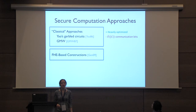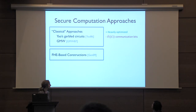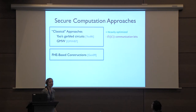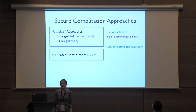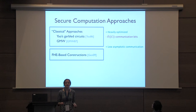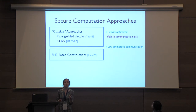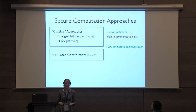In comparison, starting in 2009, breakthrough works in fully homomorphic encryption gave us the first ways of getting secure computation where communication grows asymptotically not with the circuit size, but just with essentially the input and output size, as you would want.